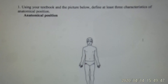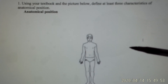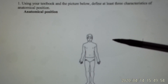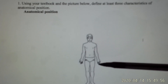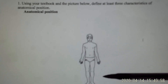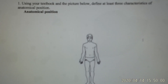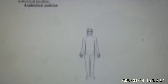The first activity is anatomical position. Students need to be able to identify what is the correct anatomical position, including the head, the body, the palms, and the legs — what is the correct anatomical position and what is incorrect, and correct them back to the correct position.